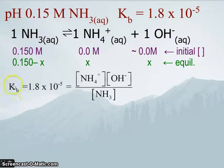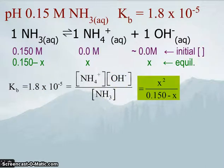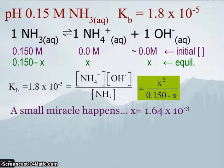Next thing we do is set up our Kb expression. So 1.8 times 10 to the minus 5 equals the ammonium ion times the hydroxide ion divided by ammonia. Plug in our equilibrium values, x squared, 0.15 minus x. A small miracle happens, we go through, we actually calculate it.